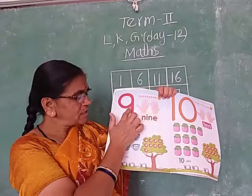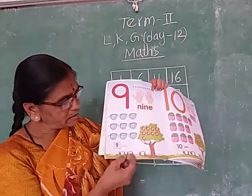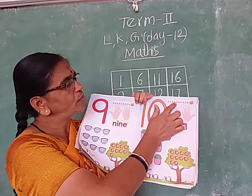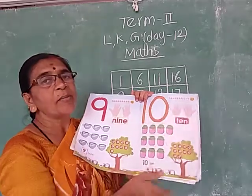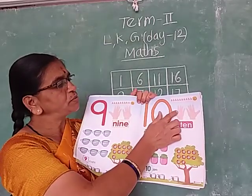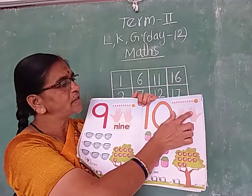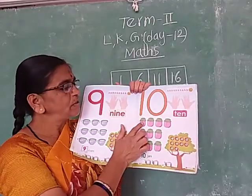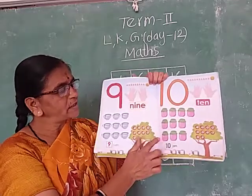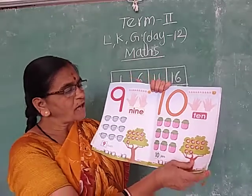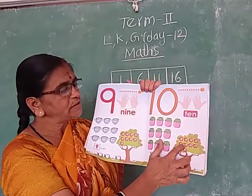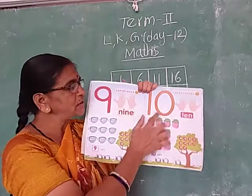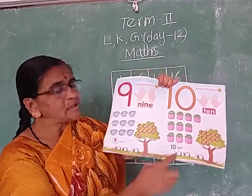9 butterflies, 9 fingers, 9 cups, 9 apples. Number 9 is there. Next number 10. 1, 2, 3, 4, 5, 6, 7, 8, 9, 10 — 10 butterflies. Count the fingers: 1, 2, 3, 4, 5, 6, 7, 8, 9, 10 — 10 fingers. What are these? These are jars. Count the jars: 1, 2, 3, 4, 5, 6, 7, 8, 9, 10 — 10 jars. Count the apples: 1, 2, 3, 4, 5, 6, 7, 8, 9, 10 — 10 apples. 10 butterflies, 10 fingers, 10 jars, 10 apples. Here is number 10. Trace it now.